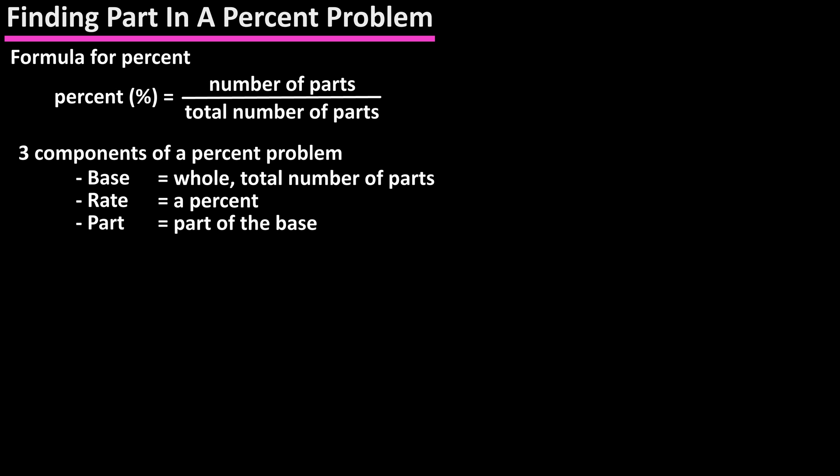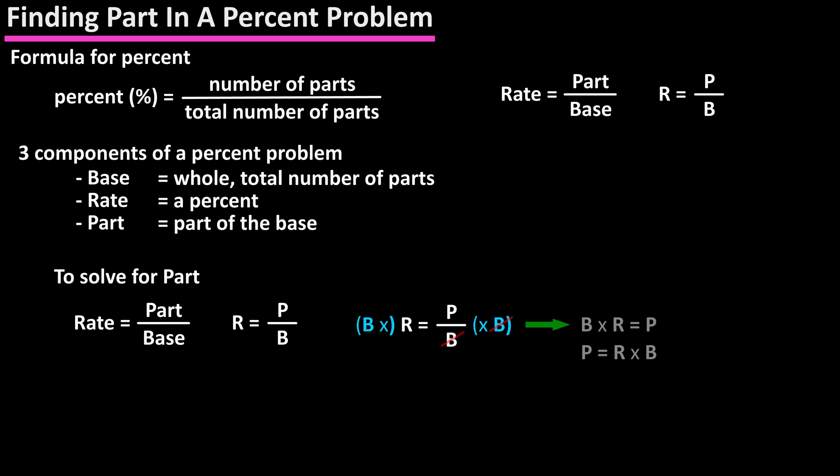The formula is rate equals part over base. If we want to find part, we can modify the formula by multiplying both sides of the equation by the base, which results in: part equals rate times base.